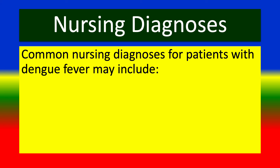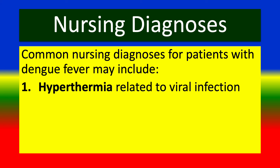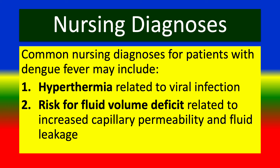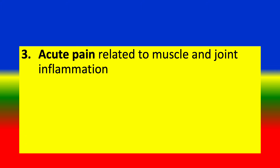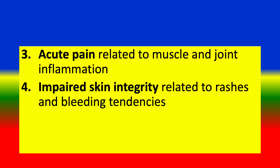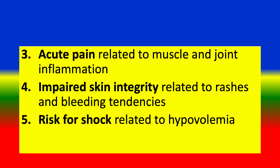Nursing Diagnosis. Common nursing diagnoses for patients with dengue fever include: hyperthermia related to viral infection; risk for fluid volume deficit related to increased capillary permeability and fluid leakage; acute pain related to muscle and joint inflammation; impaired skin integrity; and risk for shock related to rash, bleeding tendencies, and hypovolemia.